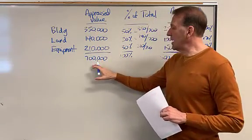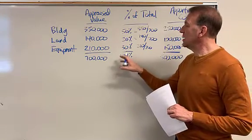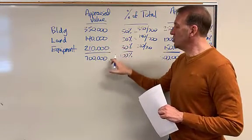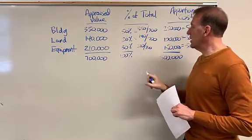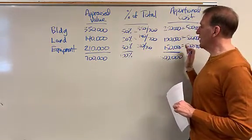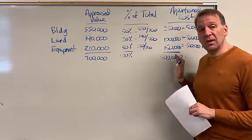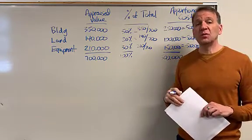So we've got our appraised value, so we're able to find out what percentage is each of these assets to the total appraised value. And that's how we got the 50, 20 and 30. And then we multiply those percentages by our purchase price in order to get the amount that will go to each asset.